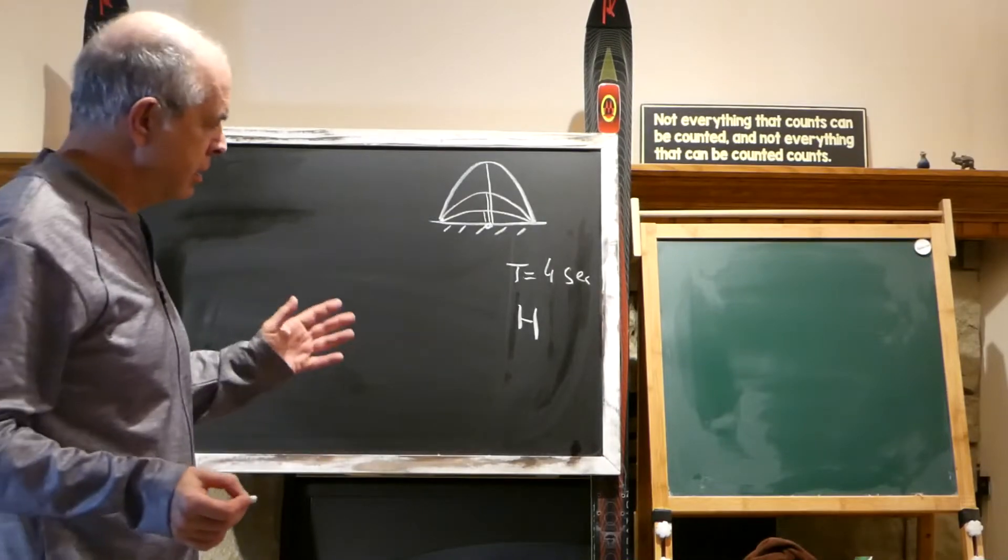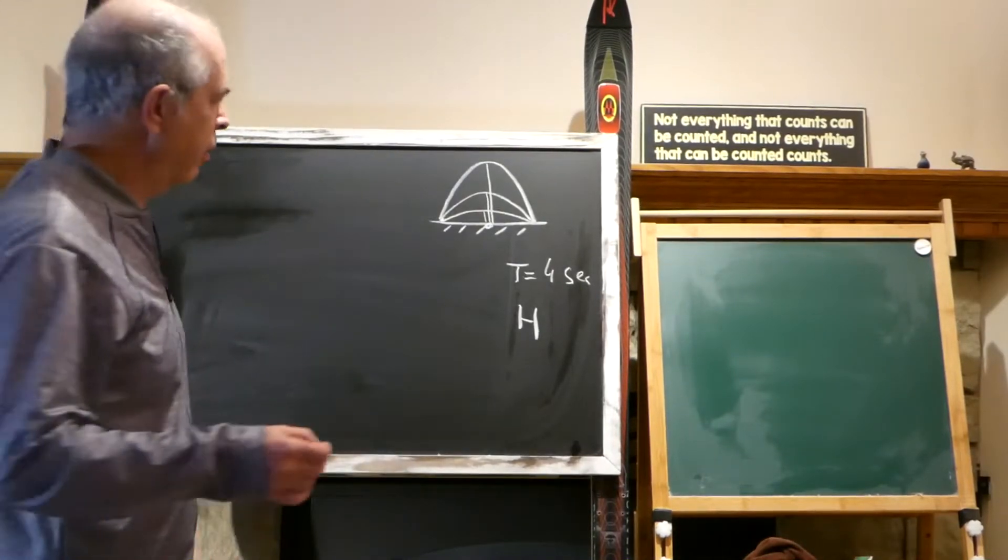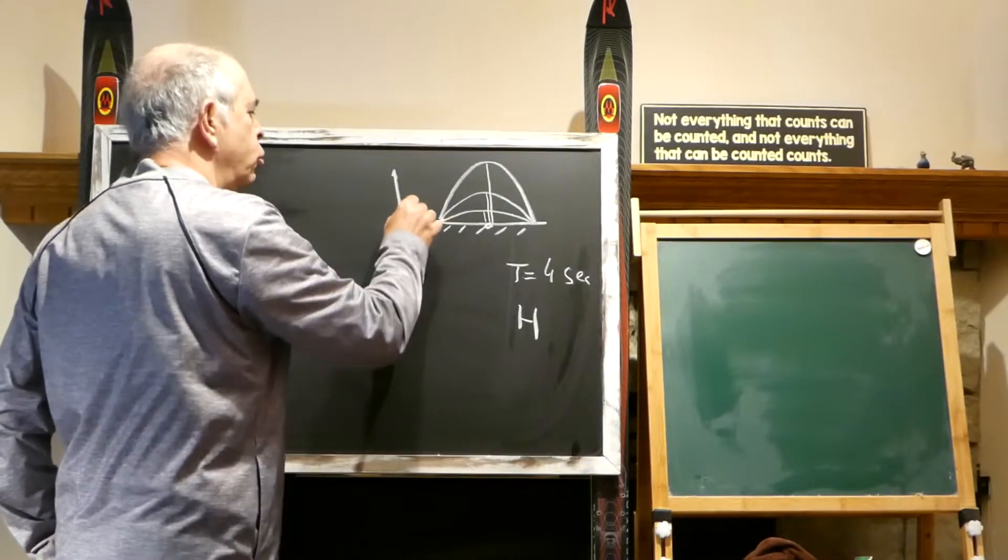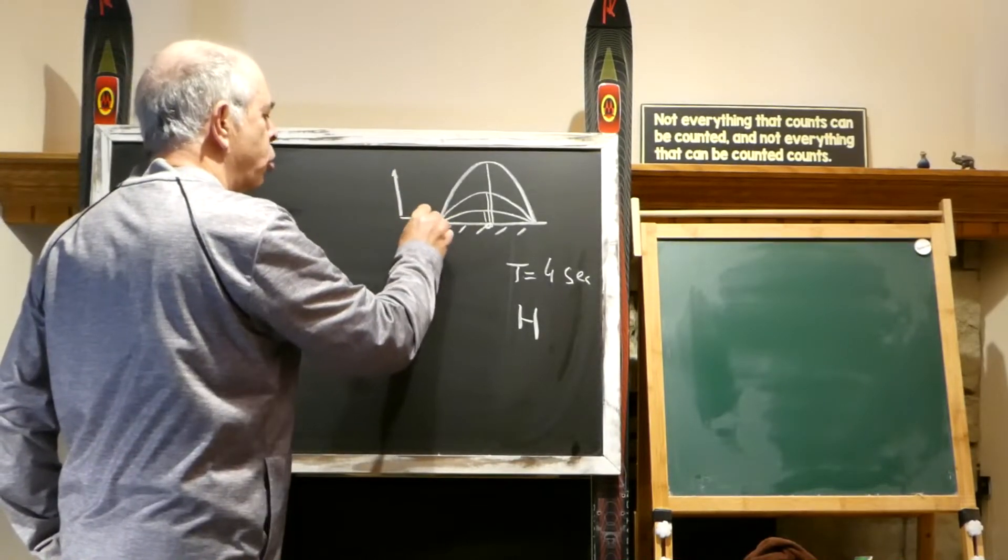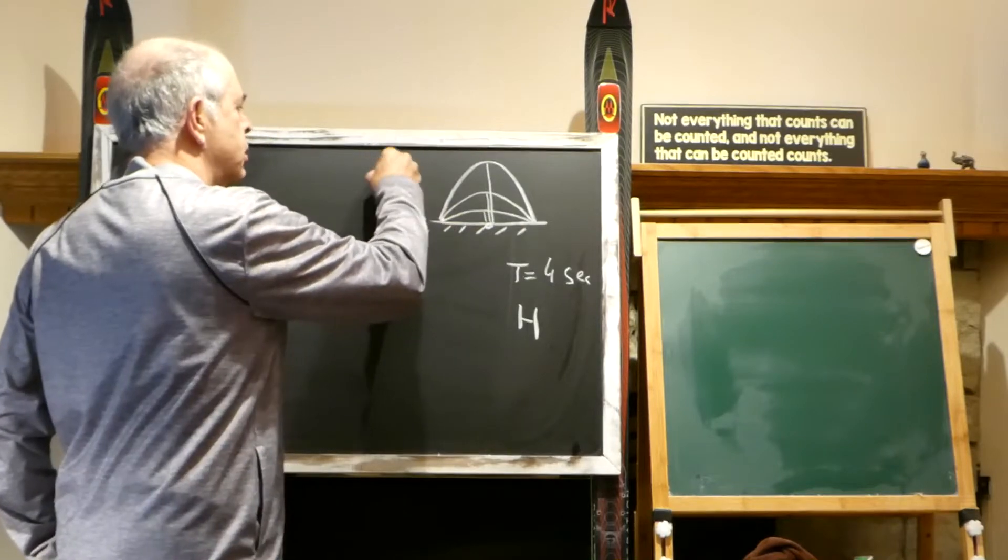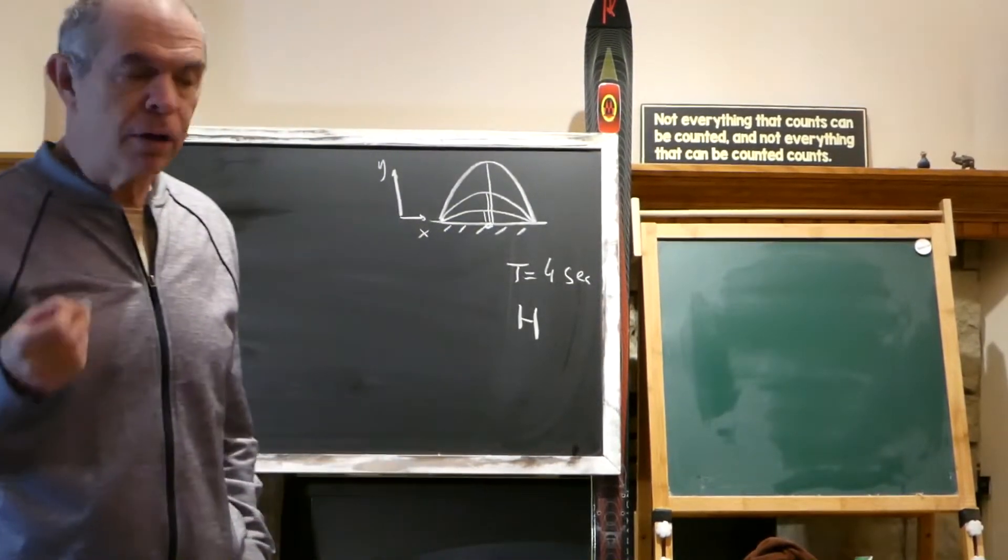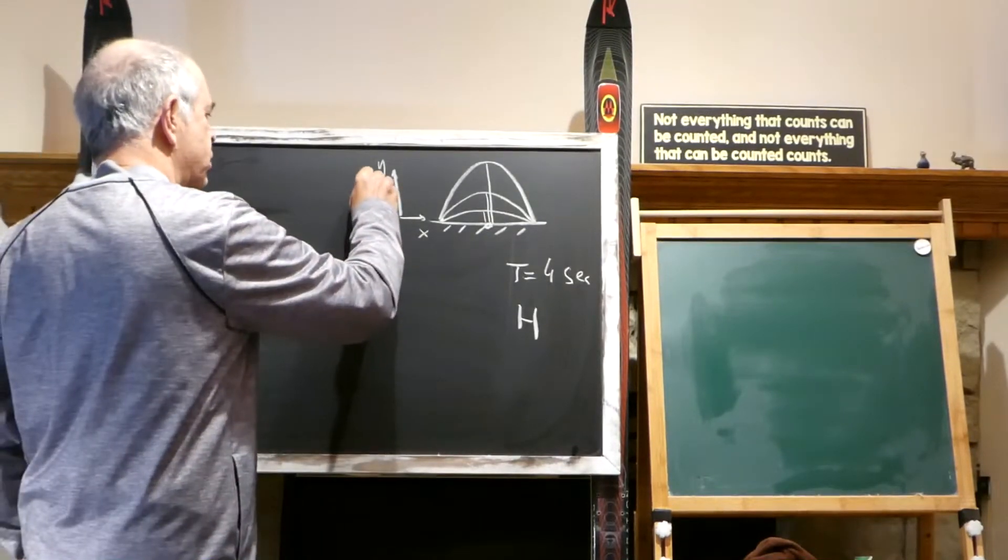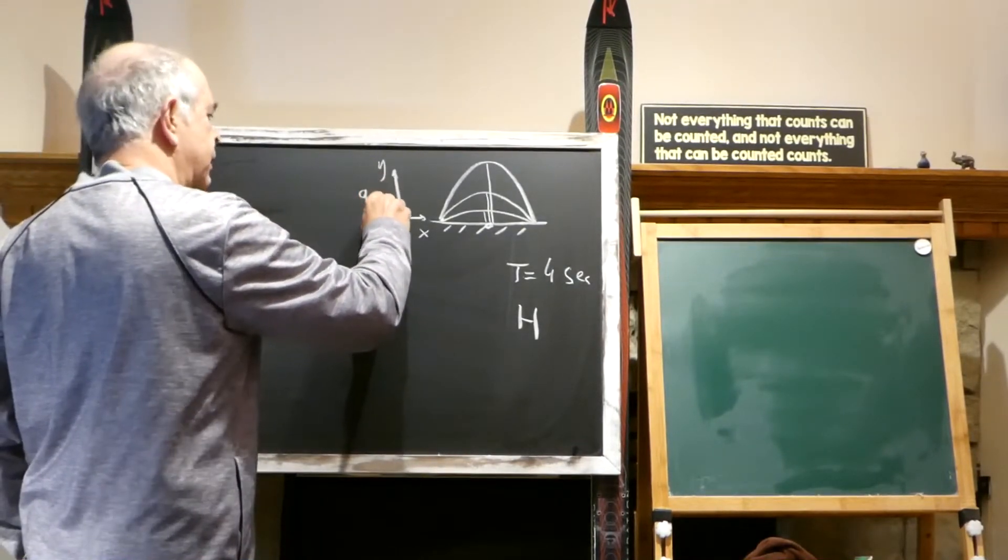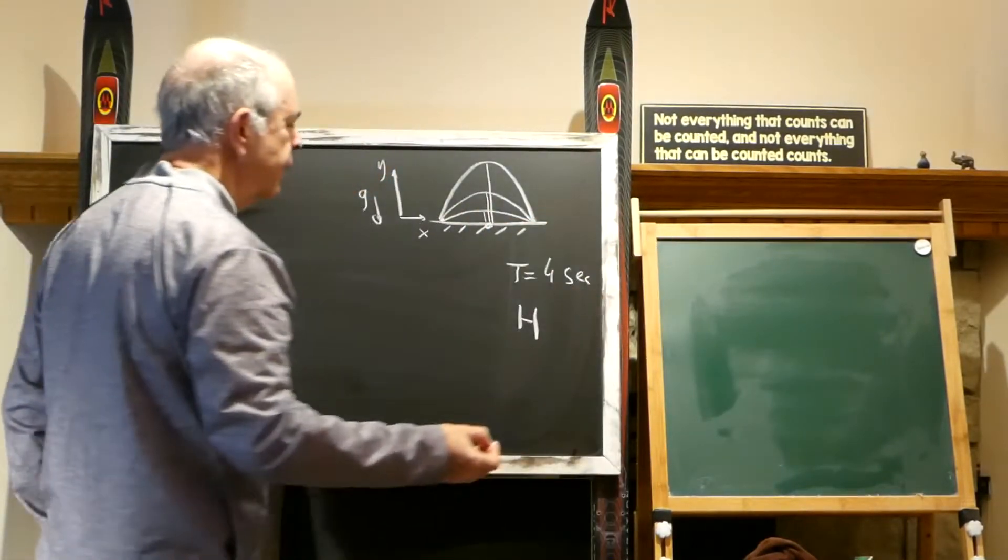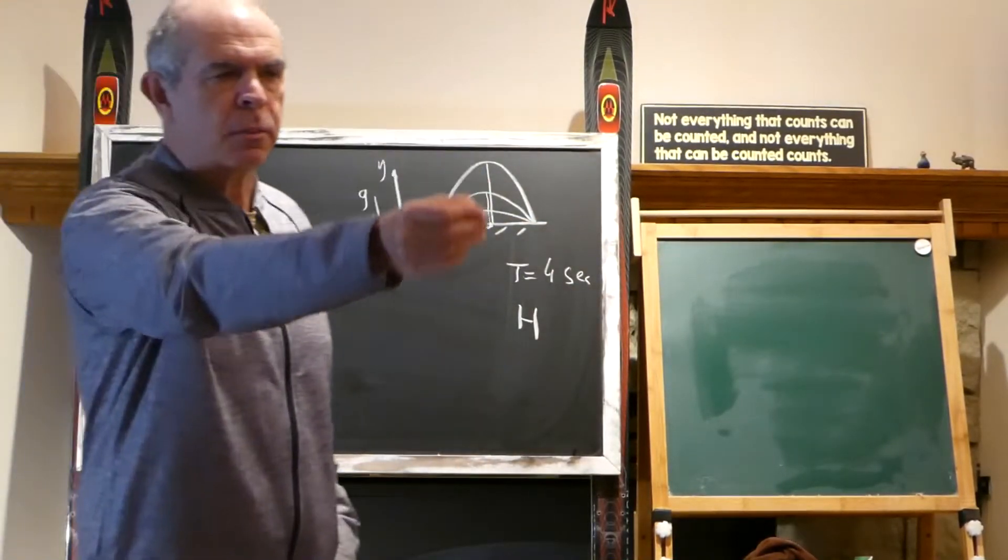It's a very straightforward problem if we recall that those are two separate motions. The motion on the vertical line is acceleration, free fall, and acceleration is g, directed down. And the motion on the horizontal line is constant speed.